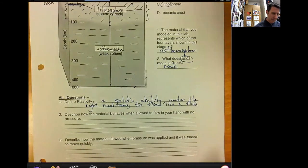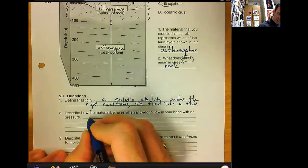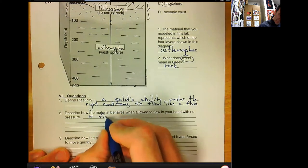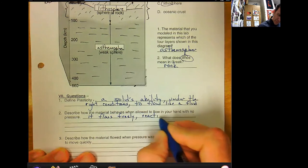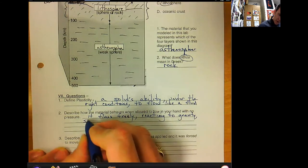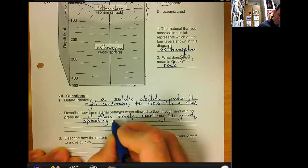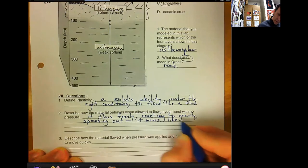Describe how the material behaves when allowed to flow in your hand with no pressure. Now if you didn't do this at home, you could refer to the segment of the video where I actually showed you what it looks like and how it does behave. Describe how the material behaves when allowed to flow in your hands with no pressure. Well, it flows freely, reacting to gravity, spreading out. Basically, it behaves and moves like a liquid.